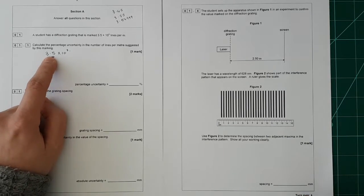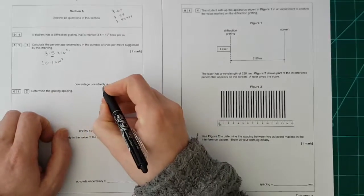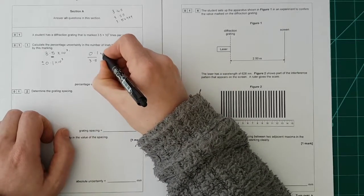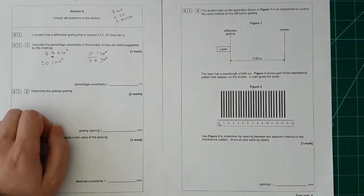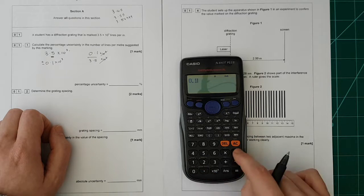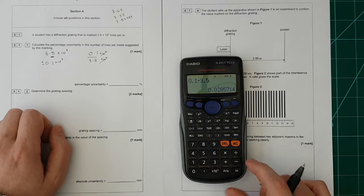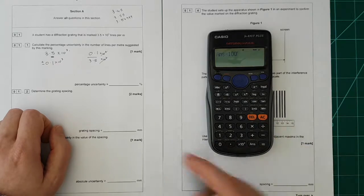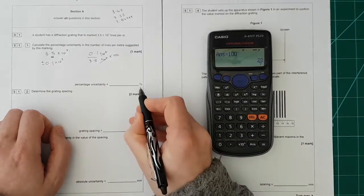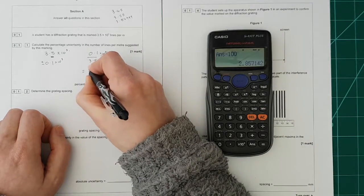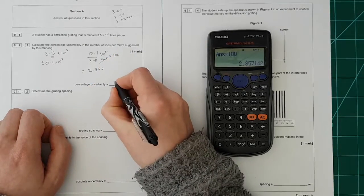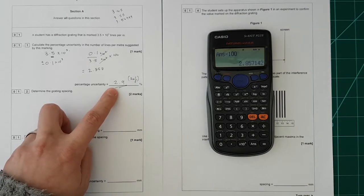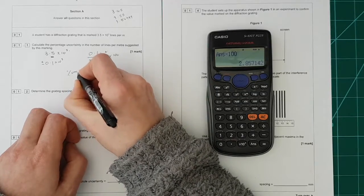So we work this value out as a percentage of that value. So we need to do 0.1 divided by 3.5. The times 10 to the 3's cancel. So here goes: 0.1 divided by 3.5 and that is then your ratio. You need to change that into a percentage, so you times by 100 to change that into a percentage, which gives you 2.857. So that is 2.9% to 2SF. And it's usually a good idea to quote all of your percentage uncertainties to two significant figures.